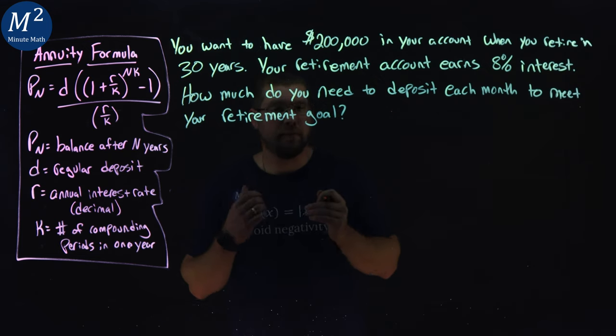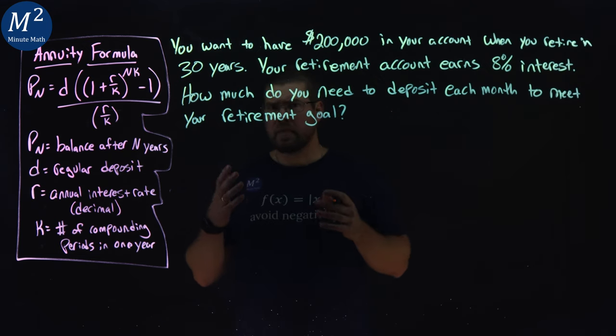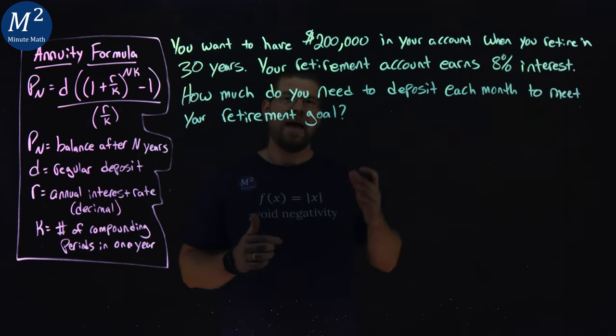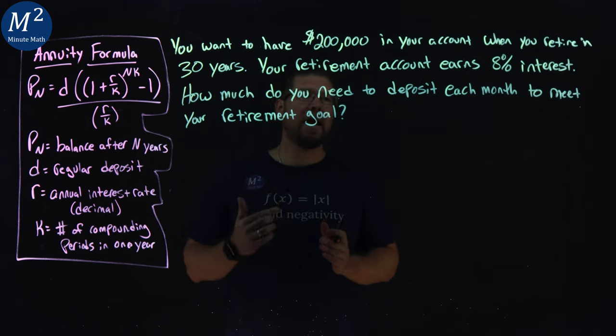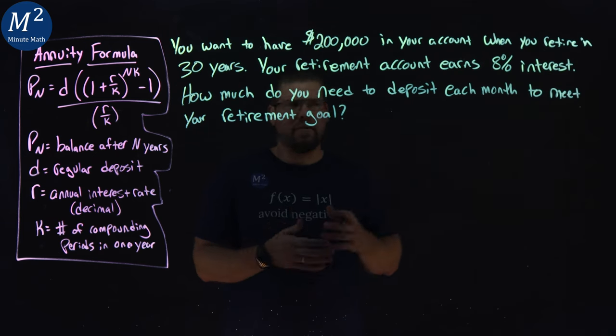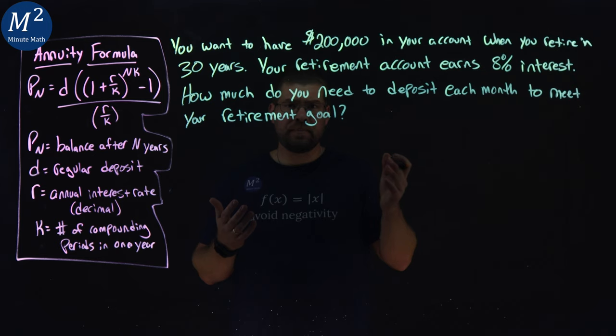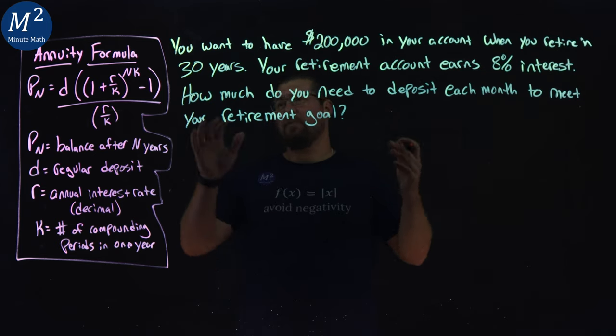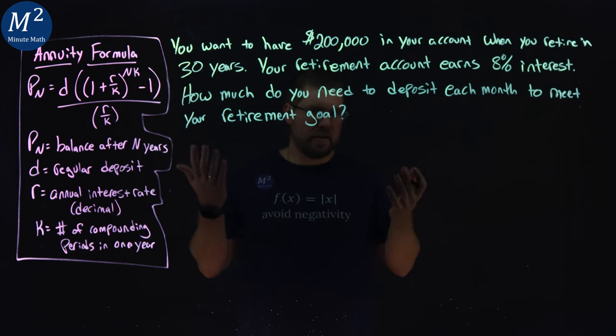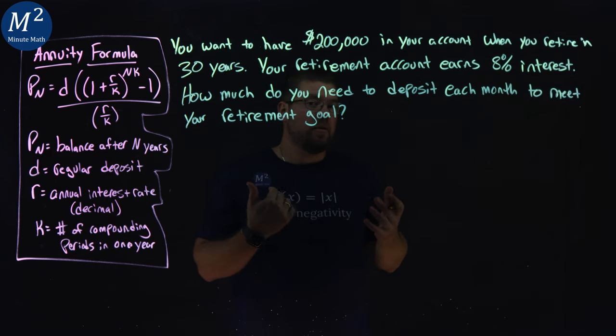This is an annuity formula, but why? Our account here is a retirement account that's growing. We're depositing an amount each month, or a set amount each time. It can be yearly, but in this case it's monthly. Over time of 30 years, we're not going to touch the account. We want to see how much it's going to grow to $200,000 in this case. That's the formula we're dealing with.